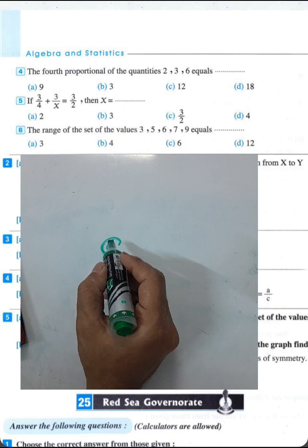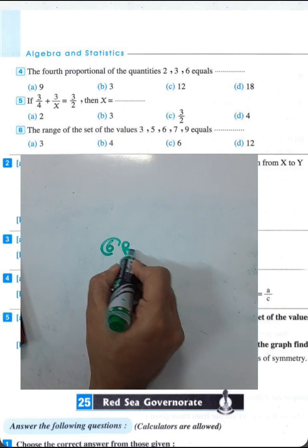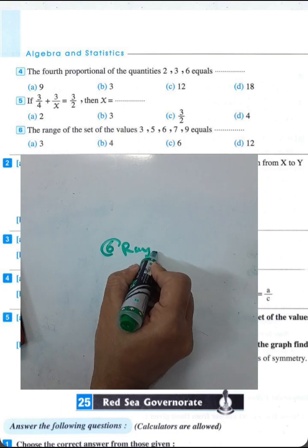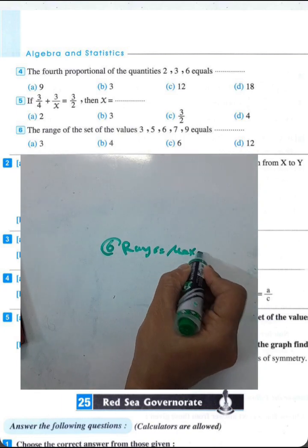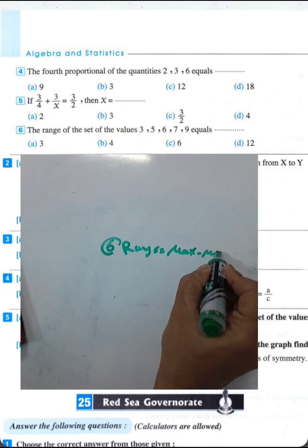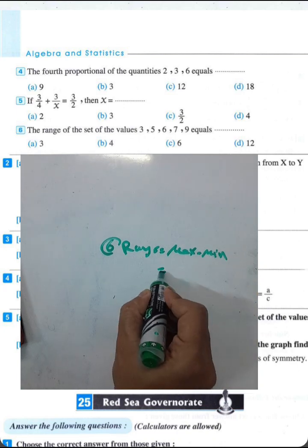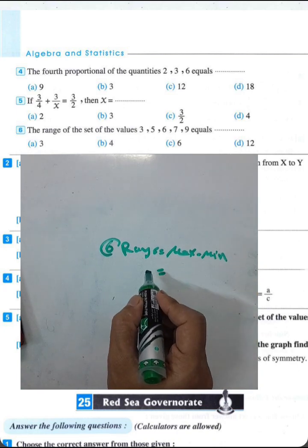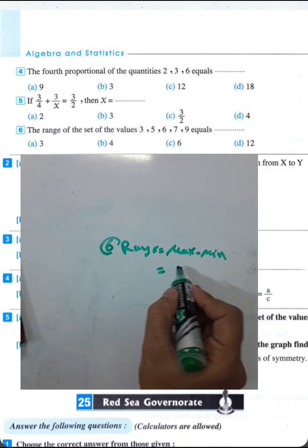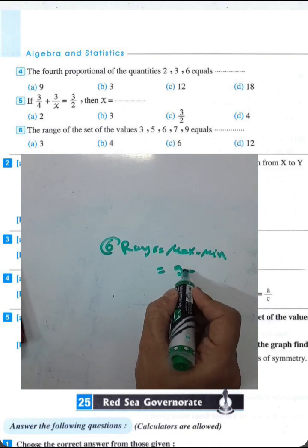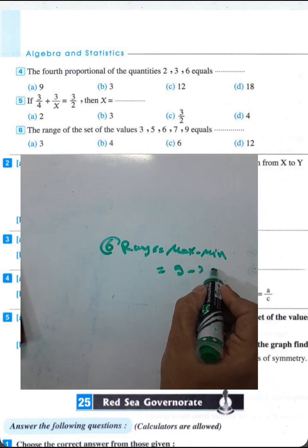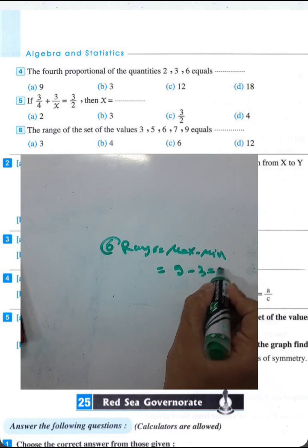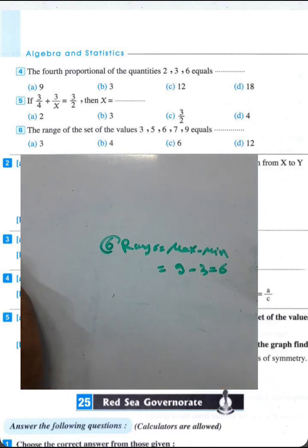Question 6 — find the range. The range is the difference between the maximum and the minimum. The maximum value is 9 and the minimum is 3, so 9 minus 3 equals 6. The range equals 6.